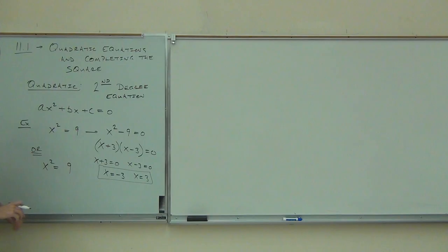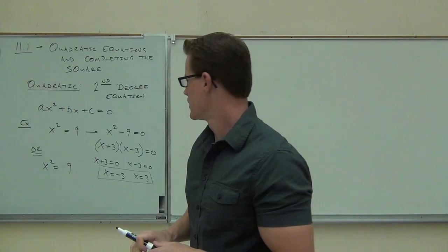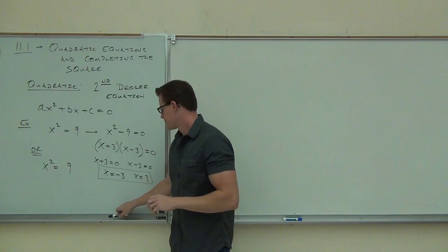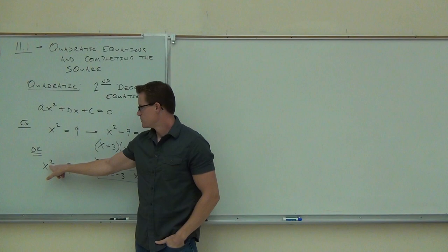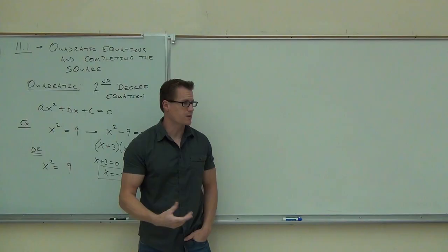Now let's look at a different way. Let's say we kept it x squared equals 9 — something squared equals a constant. Using what we learned the last few weeks, can you tell me what operation will undo a square? A square root and a square are inverse operations — they undo each other. We also know that we can take a square root of both sides of an equation.